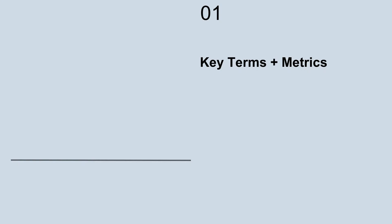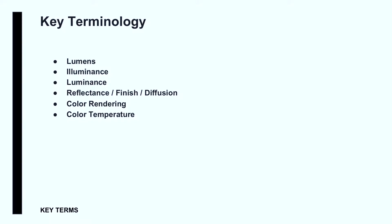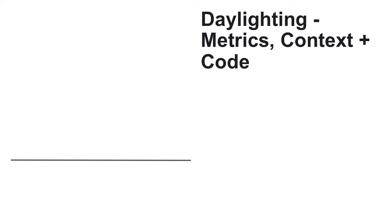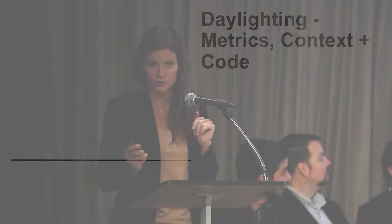So, key terms and metrics. We're going to talk about lumens, illuminance, luminance — see how tricky they are? They all sound the same. Then reflectance, finish and diffusion, color rendering, and color temperature, because they're actually a lot more simple once they're cleared out.